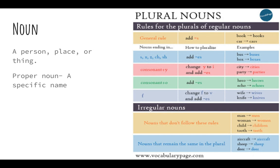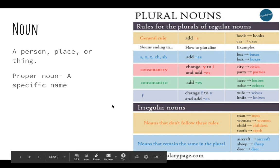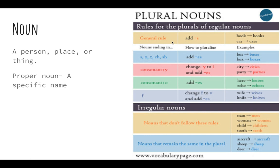Also with nouns, when we make them plural, you want to make sure that you're spelling them the correct way. Most of the time, your general rule is to add S. So if you have the noun 'book,' to make it plural — meaning more than one — you just add an S: books. Car, you add an S: cars. Teacher, teachers — add your S.